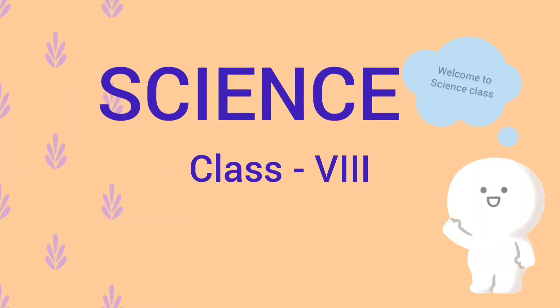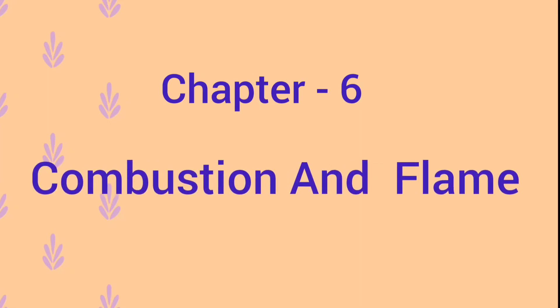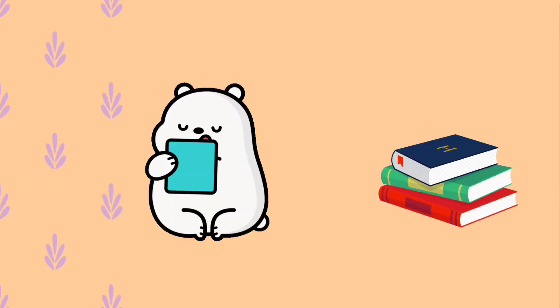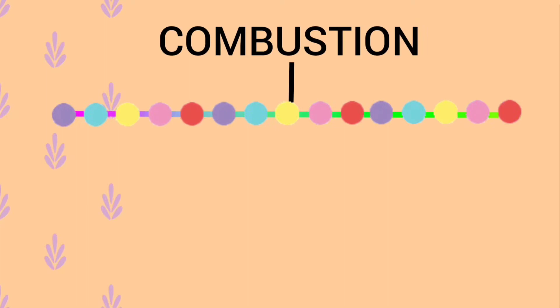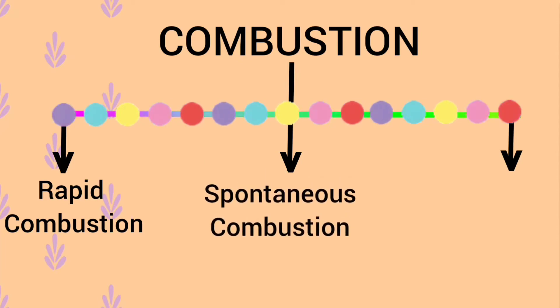Assalamualaikum students, welcome to science class. Today we will continue Chapter 6 of your science book: Combustion and Flame. In this video we will know about types of combustion. There are various types of combustion. The three important types of combustion are rapid combustion, spontaneous combustion, and explosive combustion or explosion.